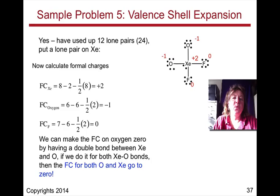Okay, so that leaves us with 3 atoms that have non-zero formal charges. Let's see if we can reduce the formal charge on oxygen. We can reduce the formal charge on oxygen to 0 by taking that single bond and making it a double bond. When we do that for both Xe-O bonds, the formal charges for both oxygen and xenon go to zero. So that gives us the best Lewis structure.